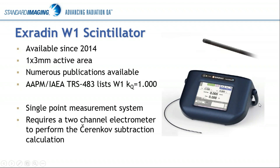It does require a two-channel electrometer like our SuperMAX electrometer to perform that Cherenkov subtraction. You can use it with two single-channel electrometers, but the timing is a little more tricky and you would have to do all of the corrections by hand.